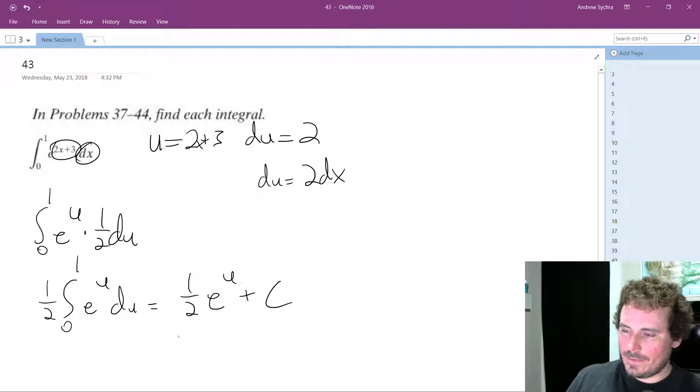And we sub back in for u, so we have 1 half quantity e raised to the 2x plus 3. And so what we're going to do now is we can leave the coefficient out in front. We can go from 0 to 1.